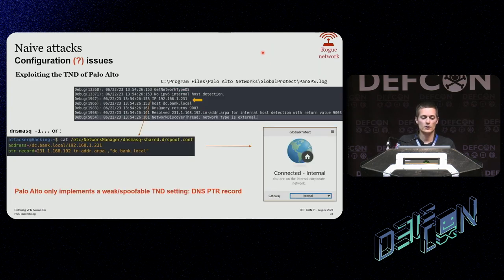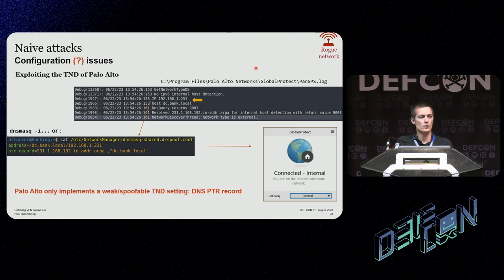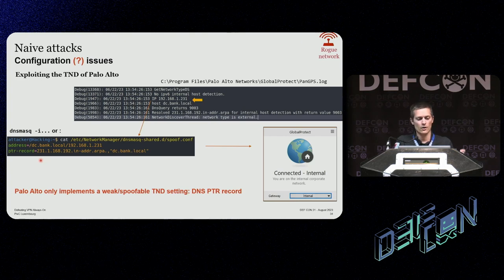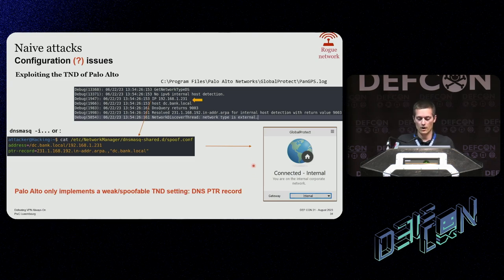Palo Alto is also vulnerable. This time it won't be in the configuration because they decided to encrypt part of the configuration — that's nice. Unfortunately the same values are leaking in clear text in the logs. You'll find everything you need there: the IP and the name of the host. One trick: it's not a DNS A record that is expected, it's a DNS PTR record, so it requires writing the IP address in inverse order. But once you do that, you are completely breaking free from the Always On feature.